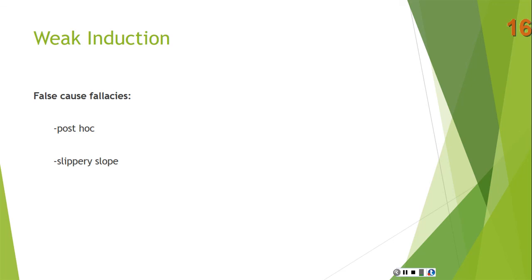So we've gone through the first set of fallacies of weak induction. Now let's go through the second set: false cause fallacies. There are two examples the book gives — post hoc ergo propter hoc, and slippery slope. We'll look at each of those in turn.